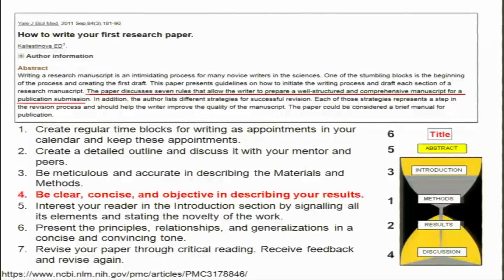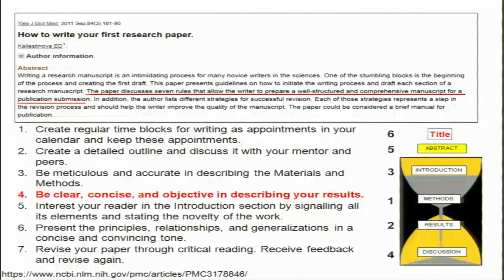What we are going to discuss today is how do you write your results section in a research paper or your thesis. One take home message for how you should write the results section is that you should be clear, concise, and objective in describing your results. Now we are going to talk about how do you write your results.